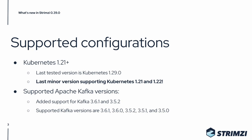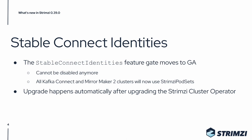A lot of the changes in this release are about some of the feature gates we support. The Stable Connect Identities feature gate moves to GA, which means it's permanently enabled and cannot be disabled anymore. This also means that all Kafka Connect and MirrorMaker 2 clusters will now use Strimzi pod sets to manage the pods instead of Kubernetes deployments.